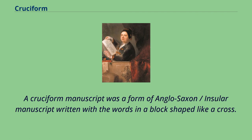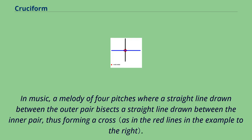A cruciform manuscript was a form of Anglo-Saxon insular manuscript written with the words in a block shaped like a cross. In music, a cruciform melody consists of four pitches where a straight line drawn between the outer pair bisects a straight line drawn between the inner pair, thus forming a cross.